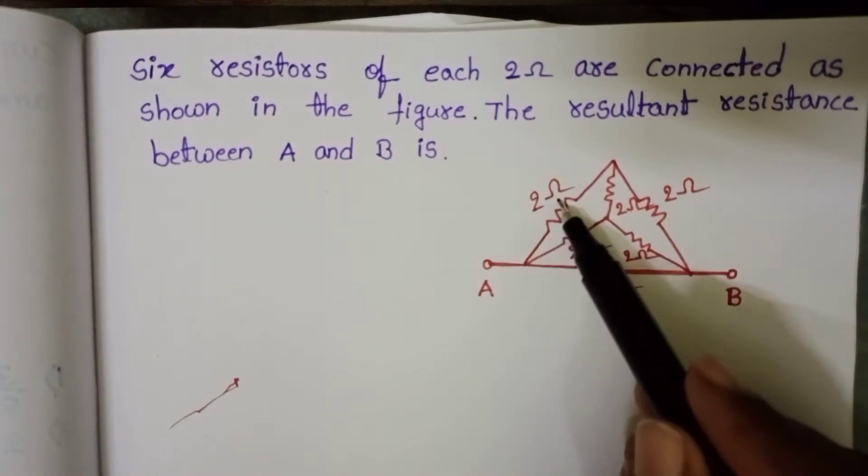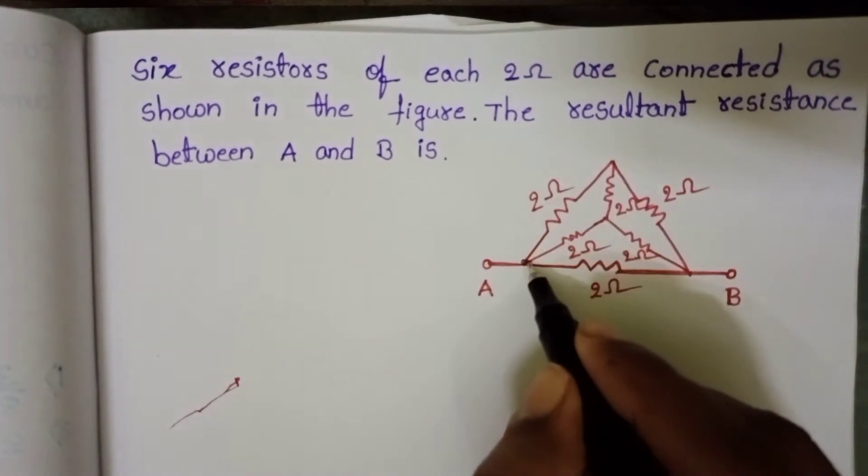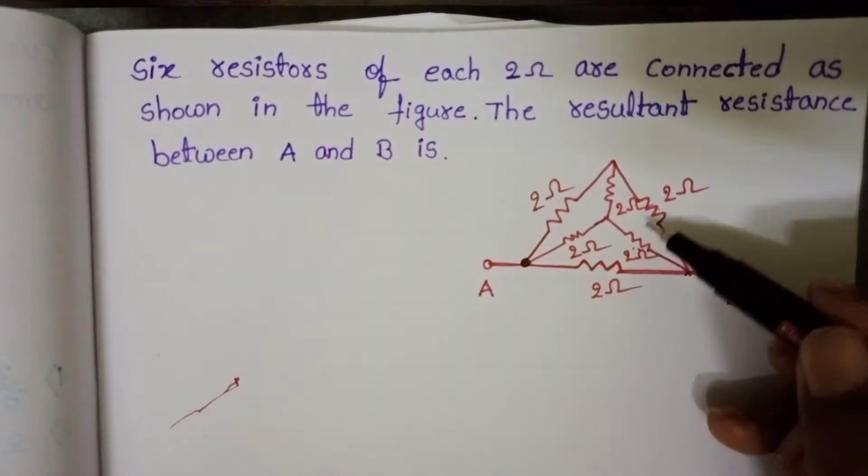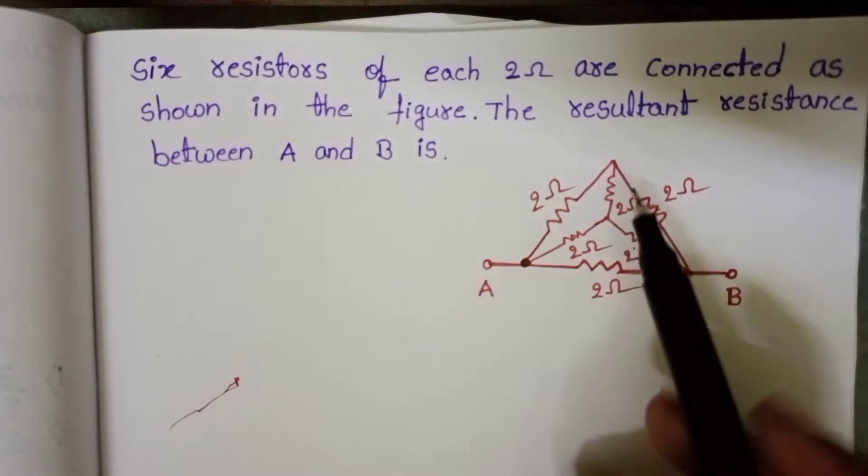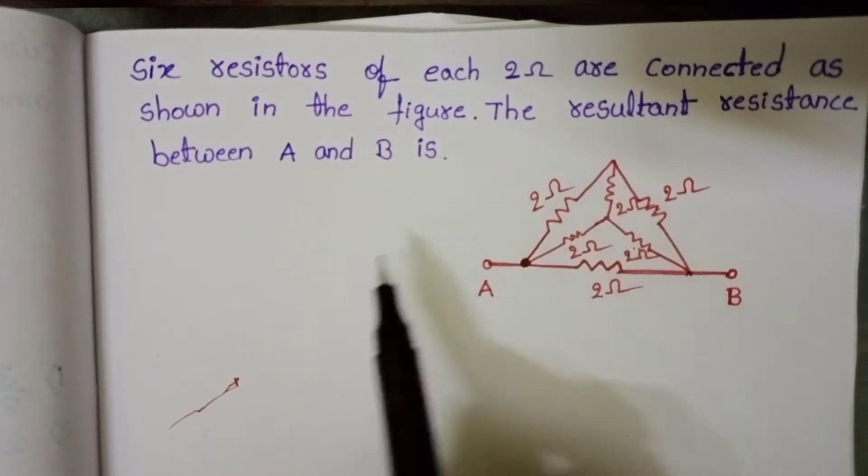This 2 ohm resistor connected to point A. These 2 resistors connected to point B. So once we draw this circuit diagram.